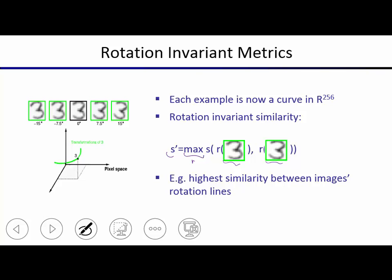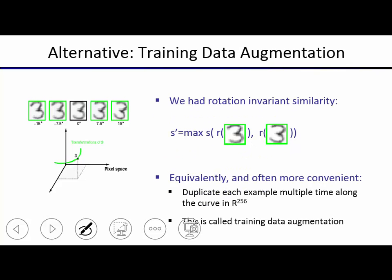There's something else you can do that's sometimes more convenient: training data augmentation. Rather than computing the max similarity at test time, ahead of time as you get your training data, you rotate, translate, skew, and change stroke thickness. One digit with a label becomes maybe a million digits with that label — all the variants you can come up with. You're augmenting your training data, multiplying it by a factor of a thousand or a million. Then at test time you just find the closest match without extra computation.